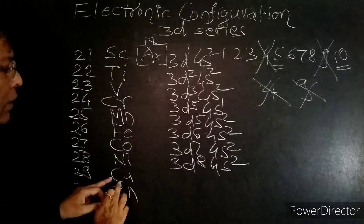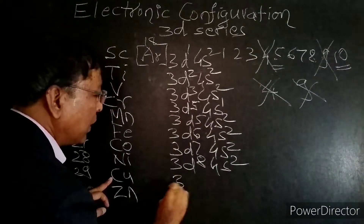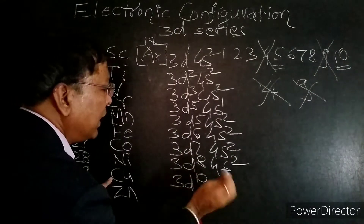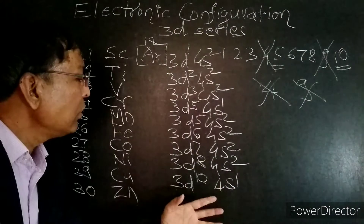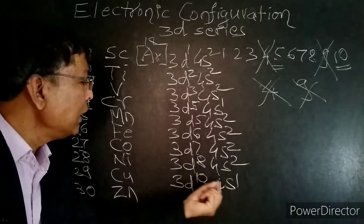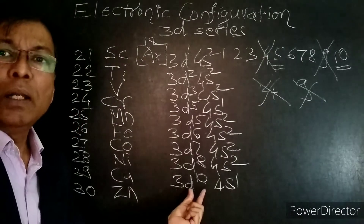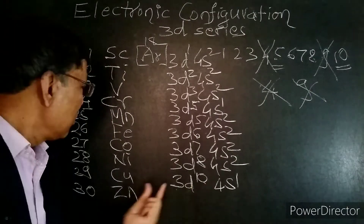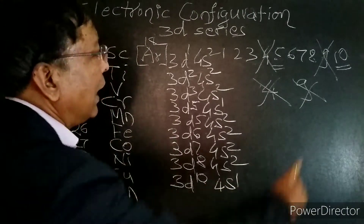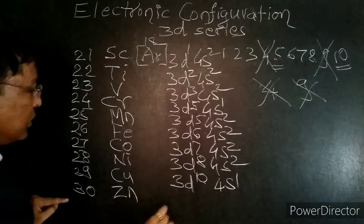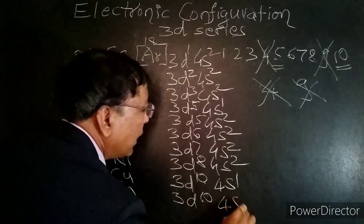Next, we should not take 9 for Copper. Instead of 9, we have to take 10. So Copper's electronic configuration is [Ar] 3d10 4s1. Why 4s1? Because one electron has gone to the 3d subshell. Therefore, instead of 3d9, Copper has electronic configuration 3d10 4s1. And lastly, Zinc: [Ar] 3d10 4s2.